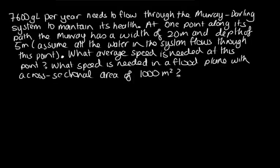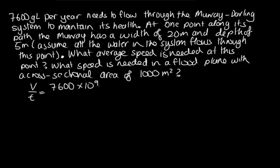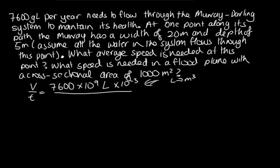We know that the volume over the time which is needed is 7,600 gigalitres — that's 7,600 times 10 to the 9 litres. We want to get this into SI units, so we'll convert it into metres cubed. If we multiply by 10 to the minus 3, that gets us from litres to metres cubed. And then we need per unit time — at the moment this is per year.